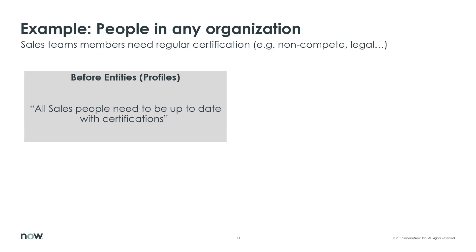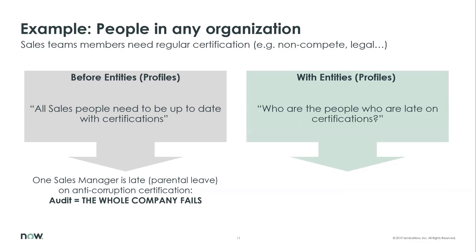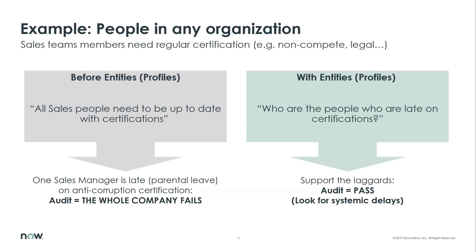One more example from my time in sales: all salespeople needed to provide a particular anti-corruption certification. If a sales manager isn't doing their job on those certificates, the whole company could fail and it gets reported to the street. With entities, we can look at this by geography, department, or line of business. As individuals attest to their controls or provide evidence, we can see where there's a breakdown in the process — identifying people who aren't getting it done in a timely manner and addressing those areas proactively based on individual control test performance.